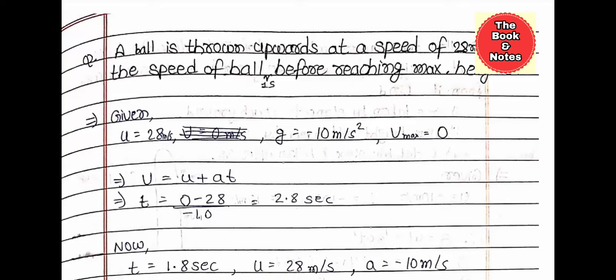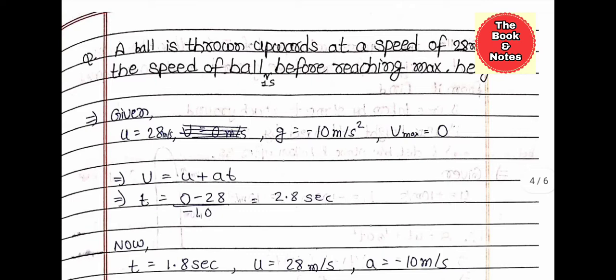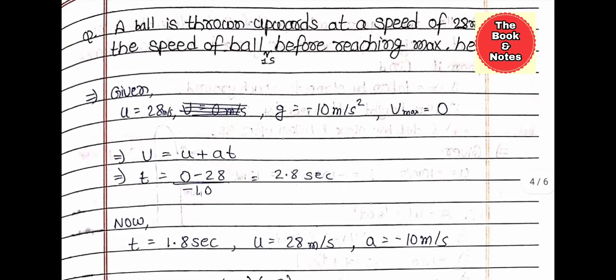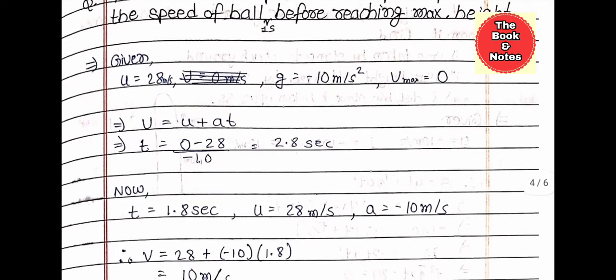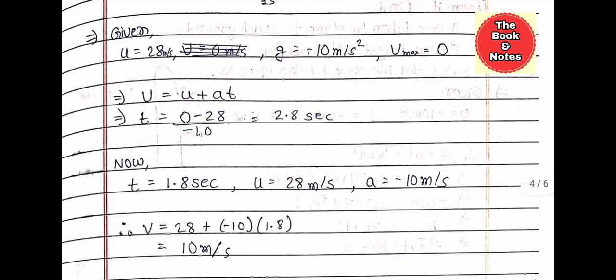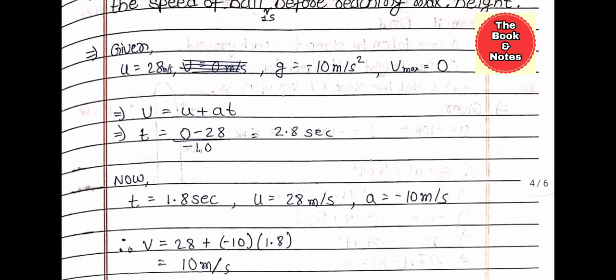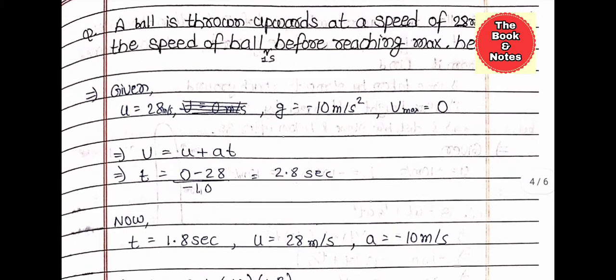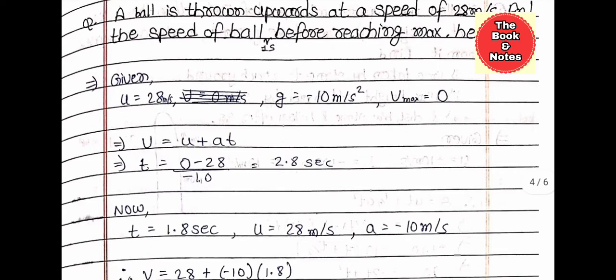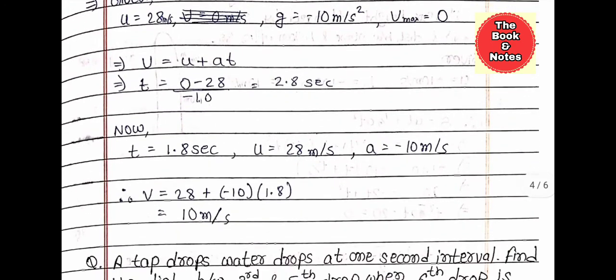The next question: a ball is thrown upward at a speed of 28 meters per second. Find the speed of the ball one second before reaching maximum height. The answer is 10 meters per second. A solution is provided — try to solve it yourself, or take help from the solution. The speed of the ball one second before reaching maximum height is 10 meters per second.